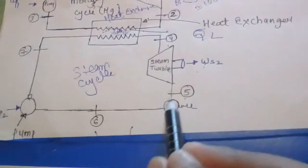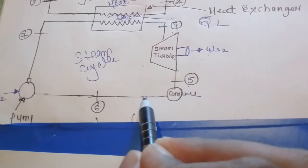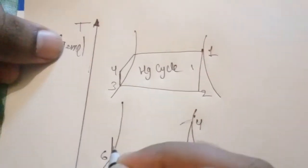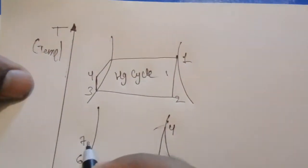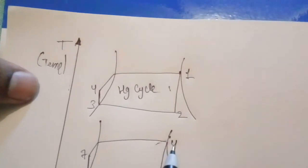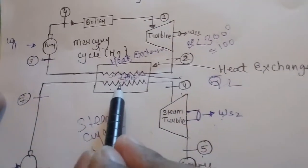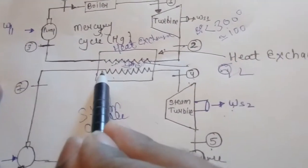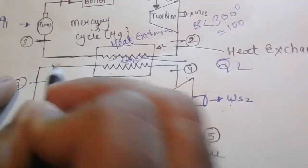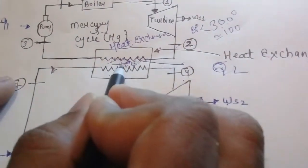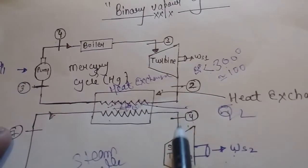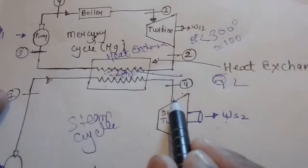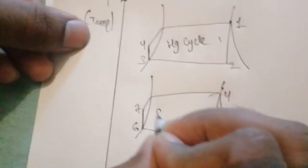From 5 to 6 is the condenser work. As you see, in the condenser the steam is converted into liquid water when it passes through the condenser. From 6 to 7 is the work done by the pump to raise the pressure of water. From 7 to 4 is the work done by the heat exchanger — heat is gained by the water coming in, gaining heat from the heat exchanger of the mercury cycle, converted into steam, and going into the steam turbine at high velocity. This is the steam cycle.